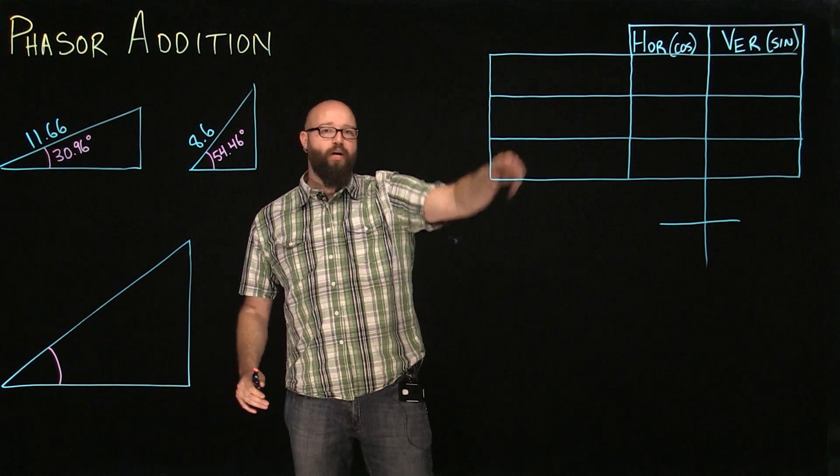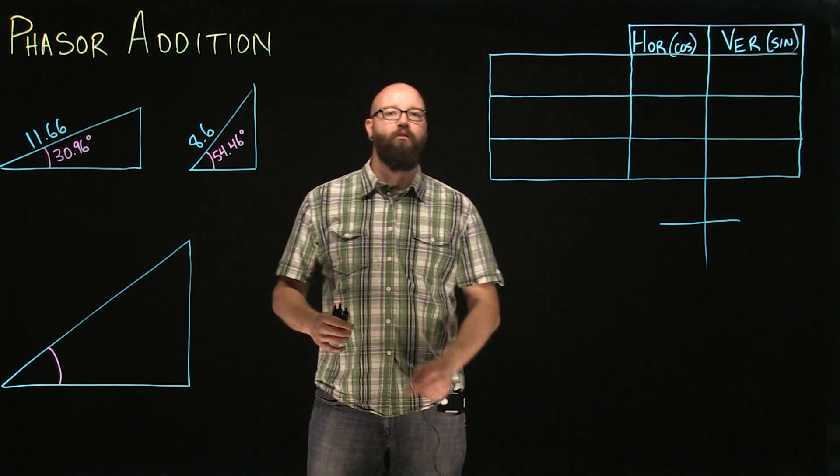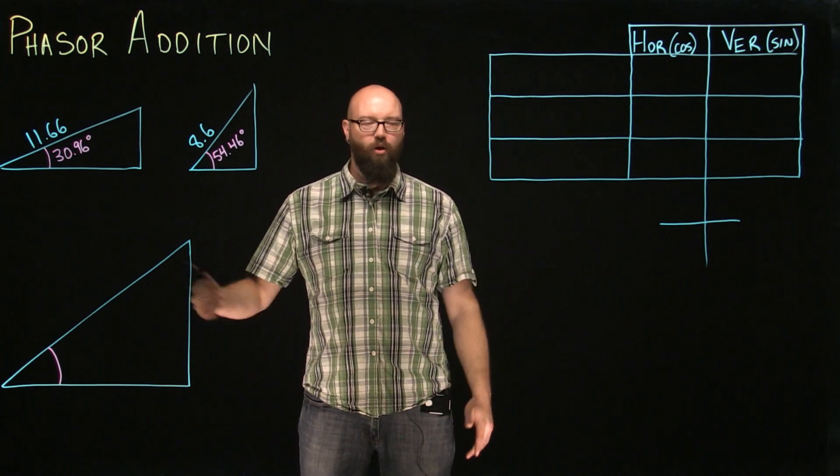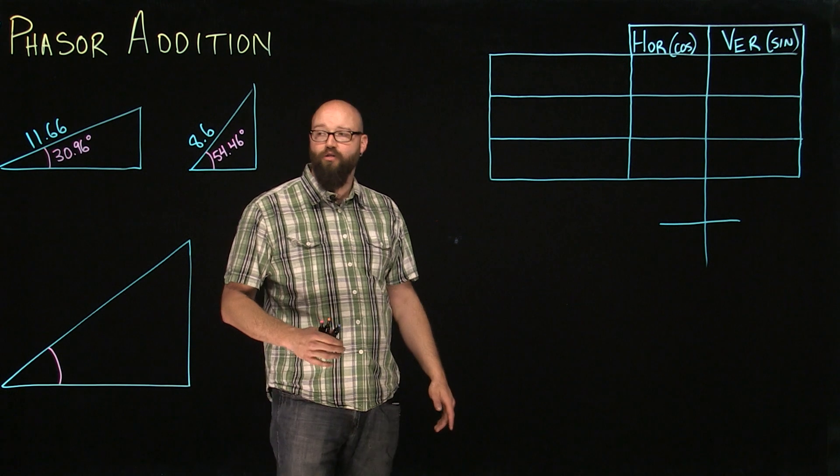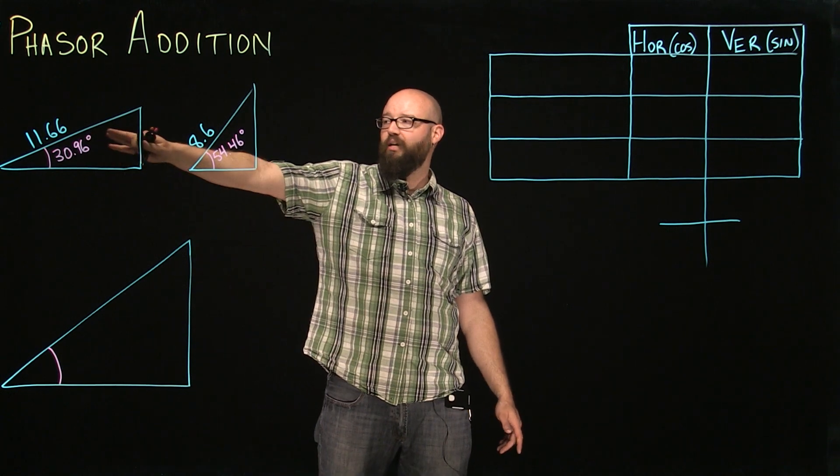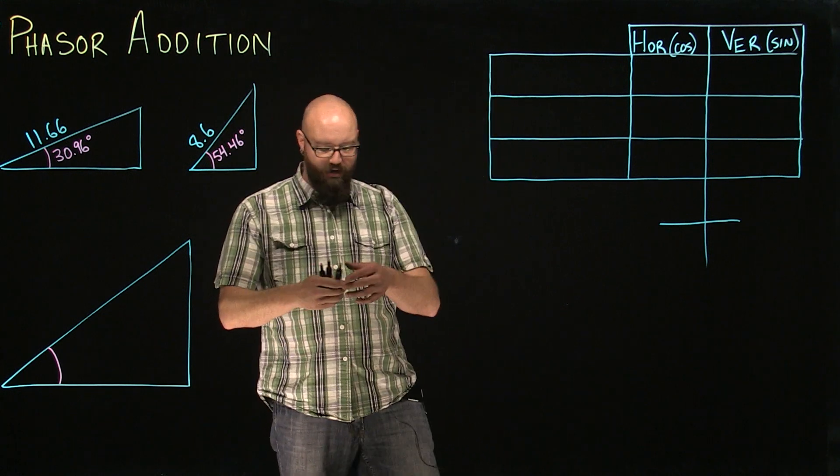What we've got over here, we have a horizontal vertical chart which helps us plot the coordinates on our triangles in a simpler way instead of just drawing a bunch of triangles all over the place. So what we're going to do is take the hypotenuse of our first triangle, 11.66, with our angle of 30.96 degrees, and I'm going to plot it right in here.